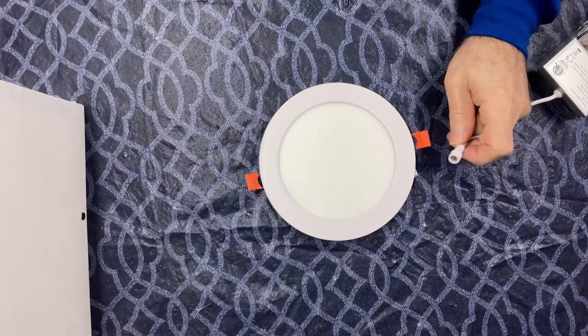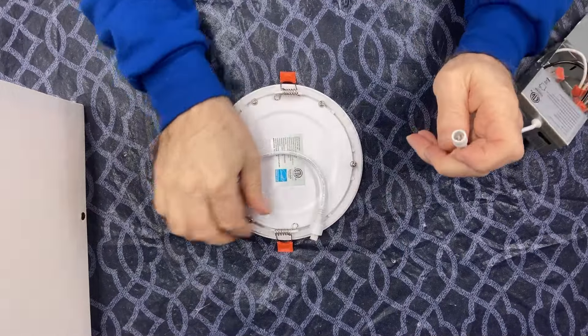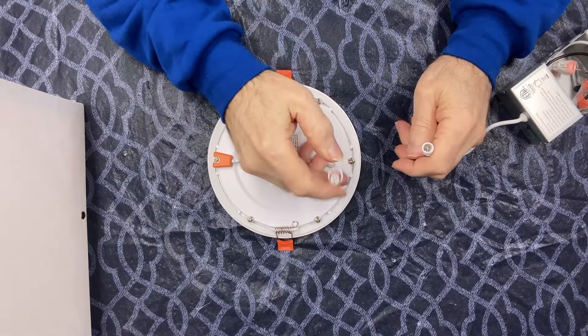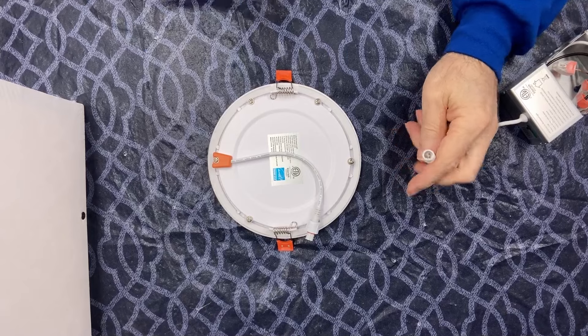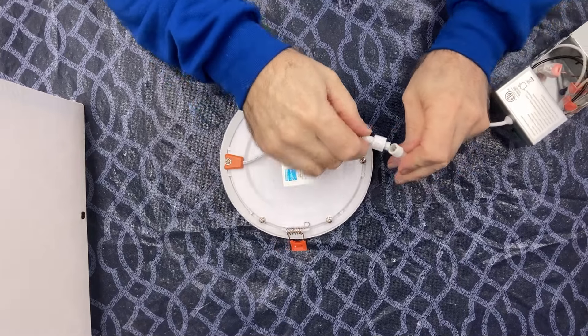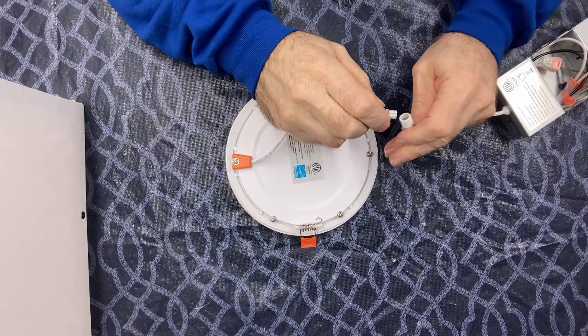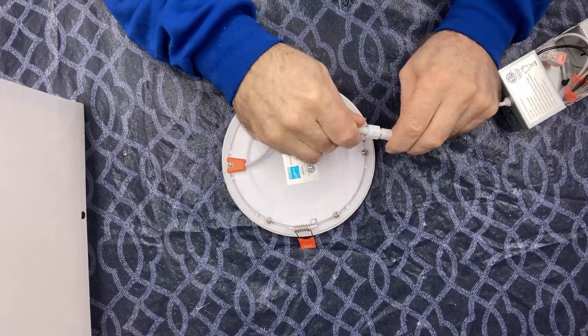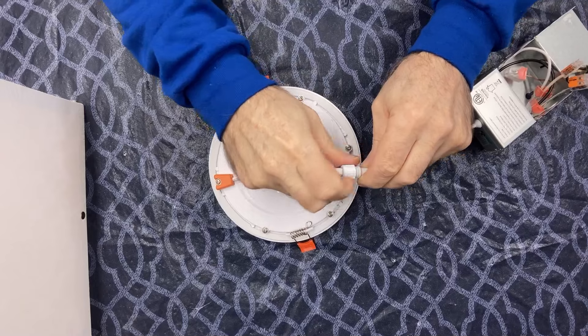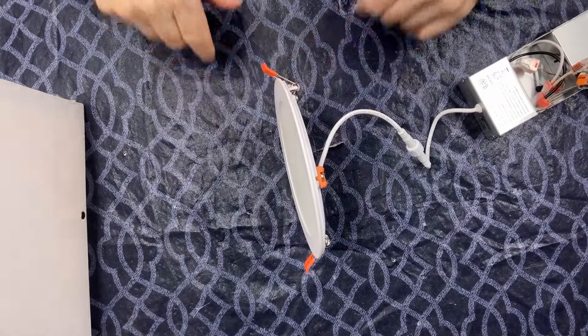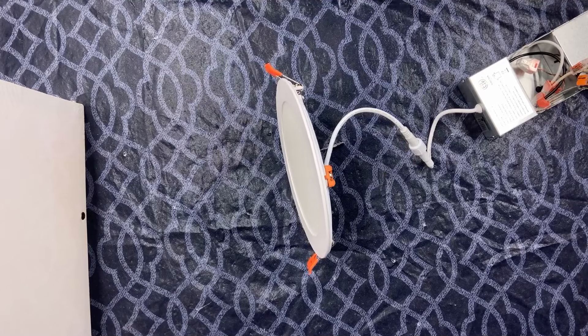We're going to go ahead and hook this up here. It's just got a little notch in here. Just look for the corresponding notch on this side and you just push that in together. Really easy to install. Push that in, then just spin this on and then your light's on. So let's get this turned on and see what it looks like.